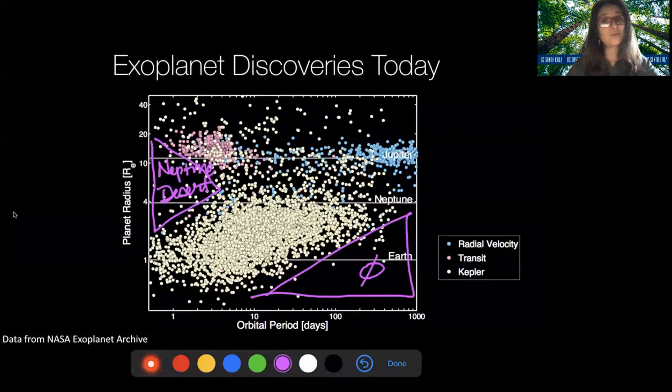There are other features. For example, there's a clump of hot giant planets over here and another clump of cold giants over here. The hot giants tell us that planets move around.